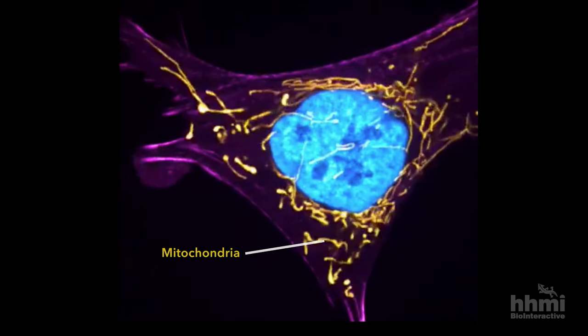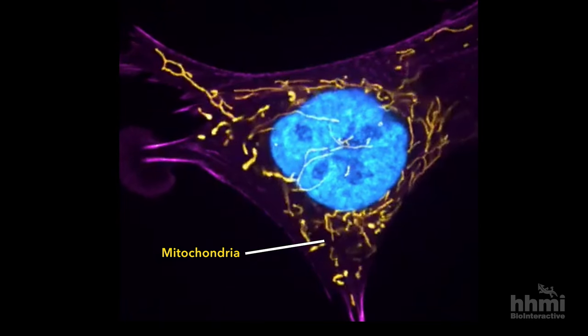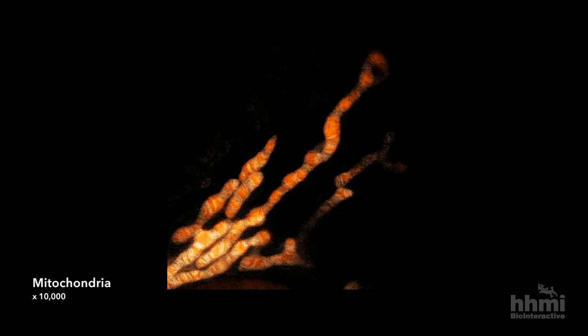Generating ATP for your living cells are mitochondria, electrochemical batteries that convert energy from the food you eat and oxygen from the air you breathe into ATP.